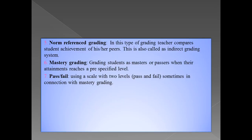Sixth, mastery grading. In mastery grading, the teacher uses two types of levels: Masters and Passers, and through these two levels, the teacher assigns a grade to the student. Seventh, we have pass and fail. In pass and fail grading, the teacher uses two levels: Pass and Fail. Pass and fail and mastery grading are two types of grading that are connected to each other — both use a two-type scale. In pass and fail, if a student's work is good and they have achieved well, they are at level 1 (pass); and if they need improvement, they are at level 2 (fail).